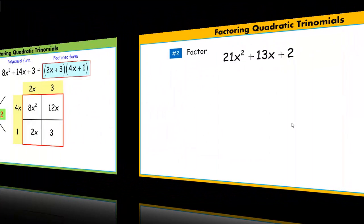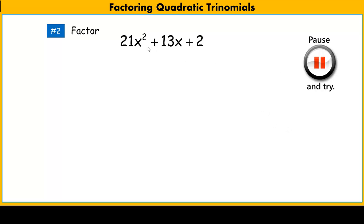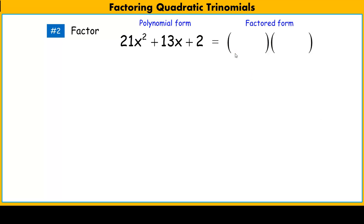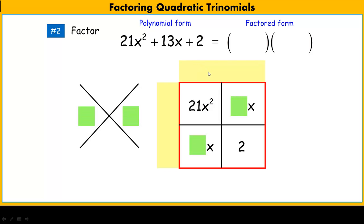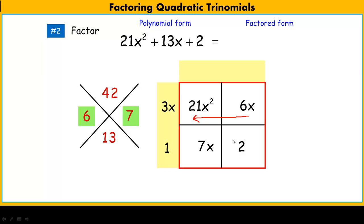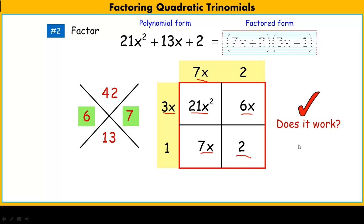Now you try one. Use the Xbox method, and once you've found your two binomials, go back into the area model to check. For this problem, a times c = 21 times 2 = 42, and the linear coefficient is 13. The product-sum pair is 6 and 7. Filling those in and finding greatest common factors: 3x and 1 going one way, 7x and 2 going the other. Checking: 3x times 7x = 21x², 2 times 3x = 6x, 7x times 1 = 7x, and 2 times 1 = 2. It checks.